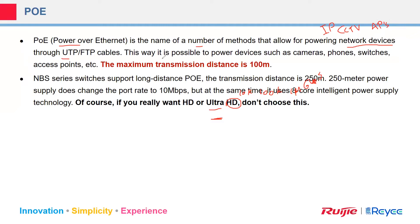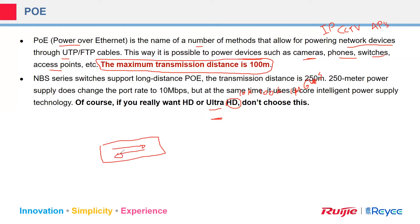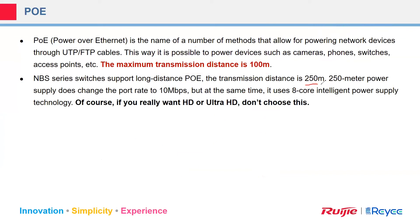PoE can power devices such as cameras, phones, switches, and access points via unshielded twisted pair or even fiber twisted pair. The maximum transmission distance between the switch and the end device — whether CCTV or IP telephony — is 100 meters. From real-life experience, I never exceed 80 meters. For better PoE transmission, MBS series switches support long-distance PoE with a transmission distance up to 250 meters.